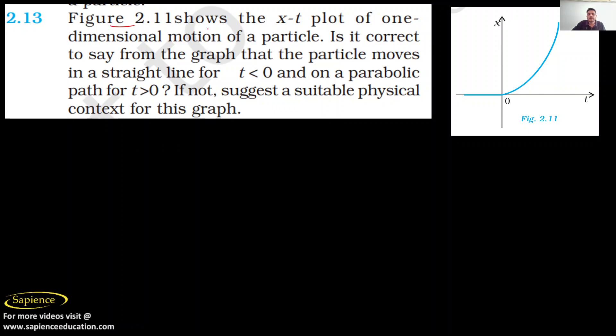In the figure, it shows an x-t plot of one-dimensional motion. So this is your x and this is your time t plot, right? Is it correct to say from the graph that the particle moves in a straight line for t less than zero?